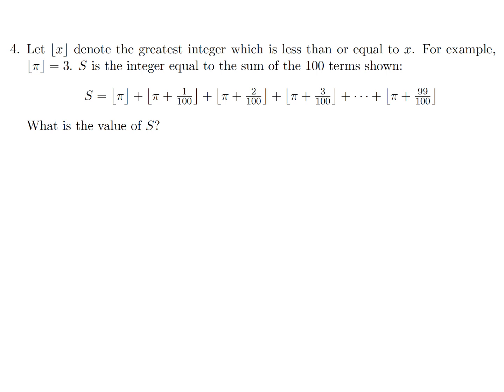Let ⌊x⌋ denote the greatest integer less than or equal to x — for example, ⌊π⌋ = 3. S is the integer equal to the sum of the first 100 terms shown. What is the value of S? Let's see what kind of pattern we get: this is approximately ⌊3.14⌋, because π is 3.14159...